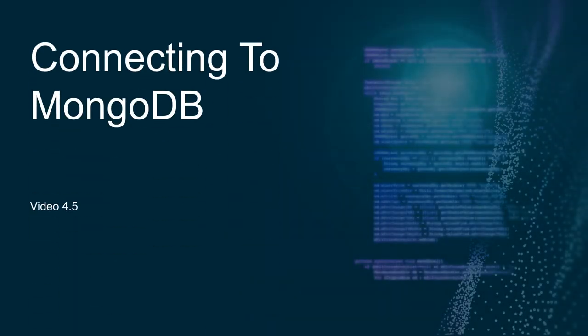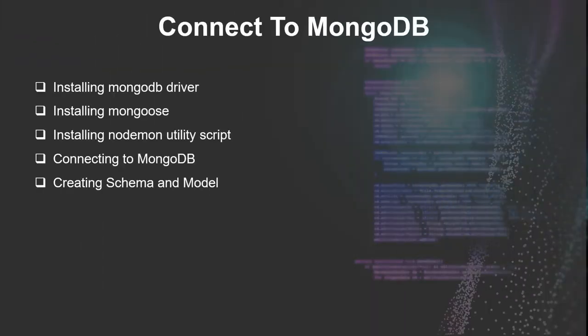In this video, we'll modify our app to make a database connection to MongoDB. We'll be using an object data model or ODM program called Mongoose. Using Mongoose, we'll be able to create schemas and models that will work flawlessly with MongoDB in an asynchronous environment.